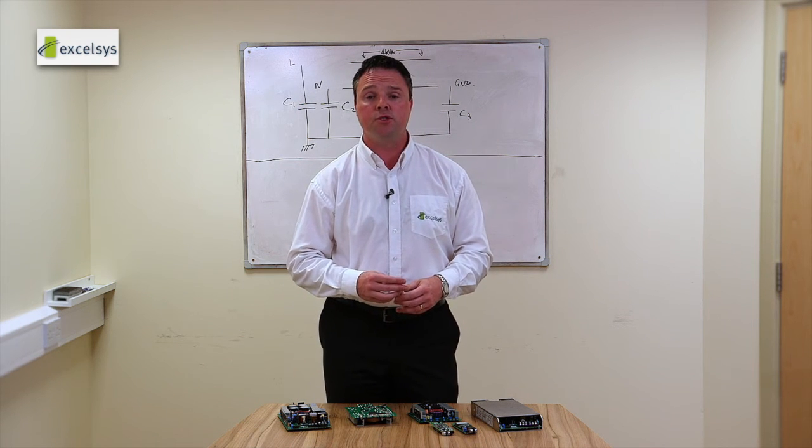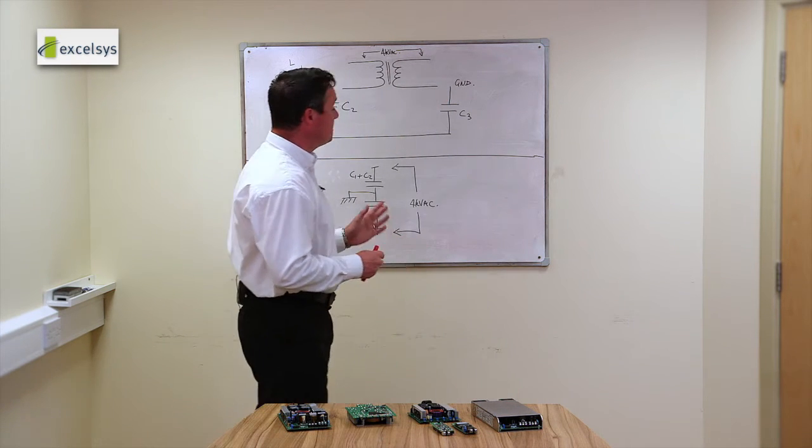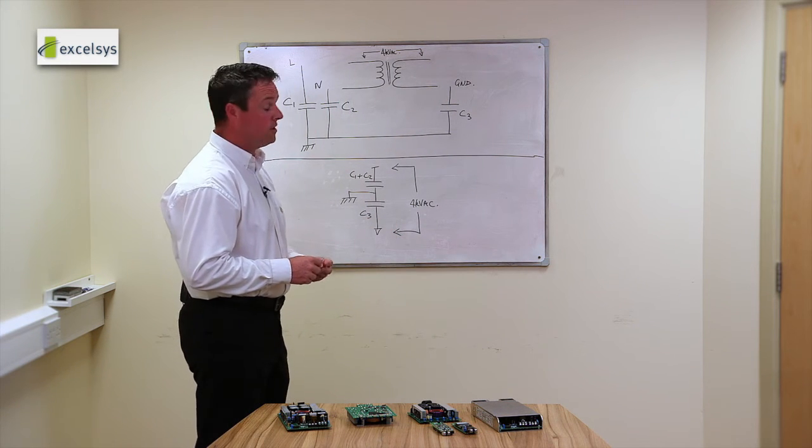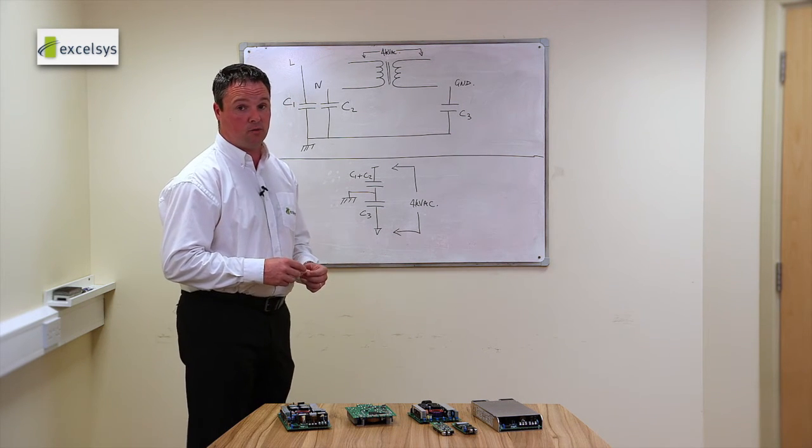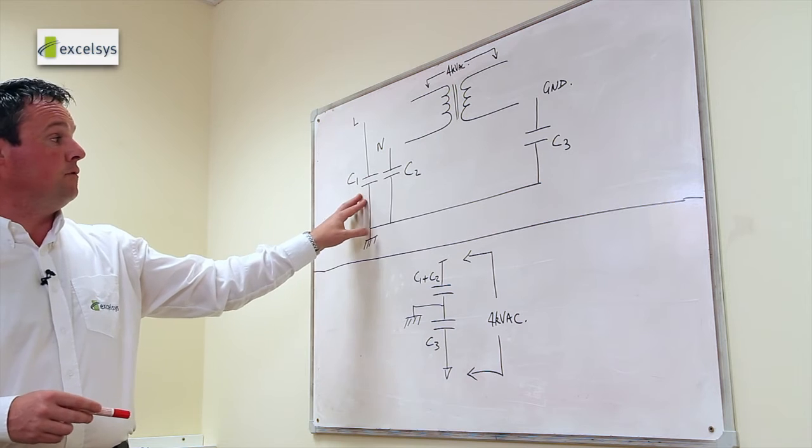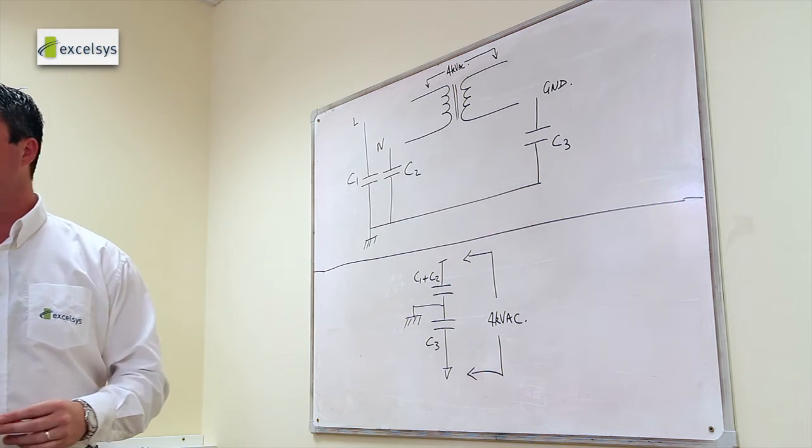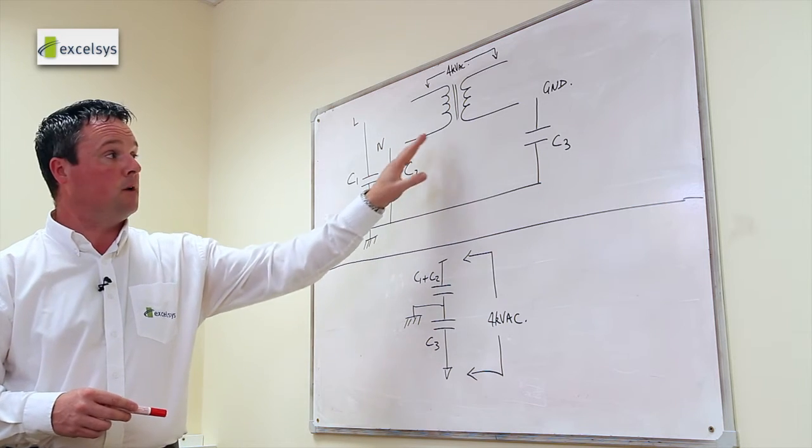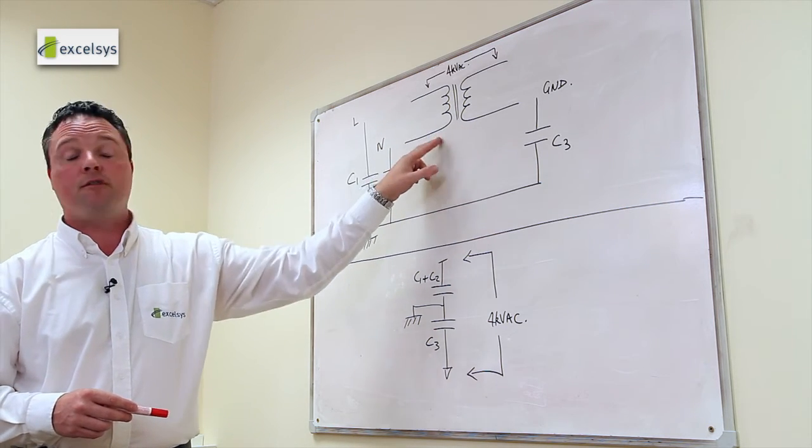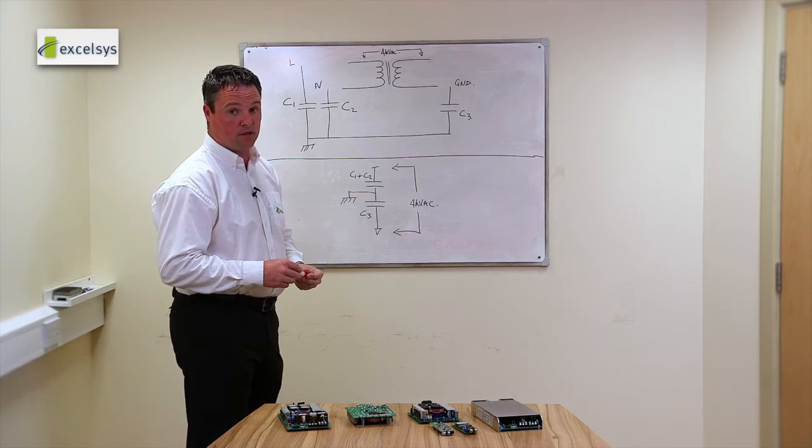So the solution to these are threefold. The first one is that because it is type testing, you were only testing for the dielectric breakdown. And under EN 6601 guidelines, you can remove these Y capacitors. So that's the first step. Remove the Y capacitors, complete the test and you're verifying that the dielectric of the isolation barrier doesn't break down.